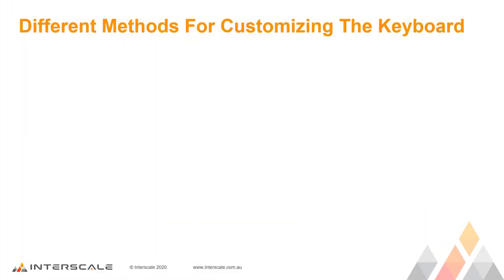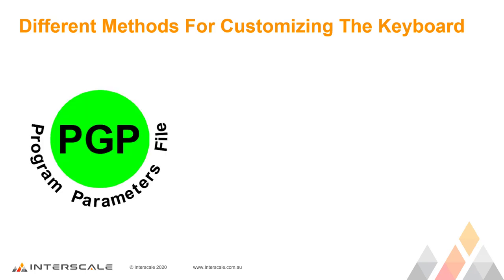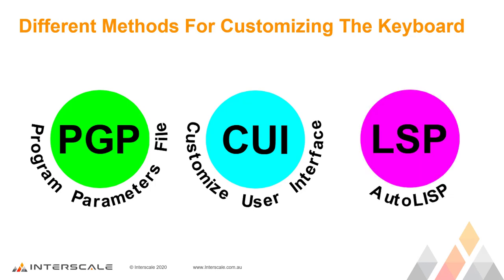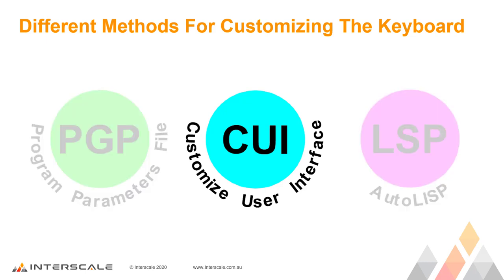We're going to look at three different ways of customizing the keyboard inside AutoCAD. The first method is by customizing the PGP file, or Program Parameters file. The second method is by customizing the CUI, or Customize User Interface file. And the third and last method is by creating an LSP, or Autolist file. In this session, we're going to be looking at the CUIX file.